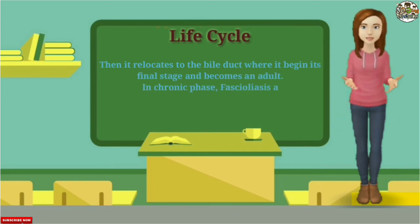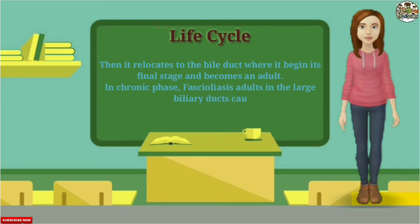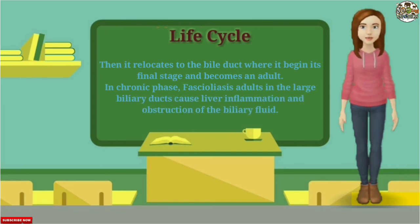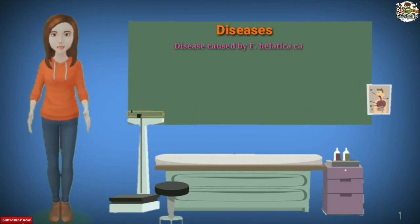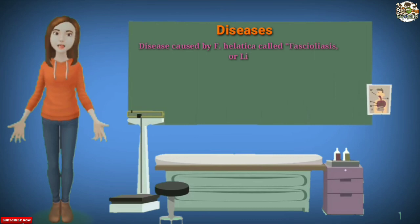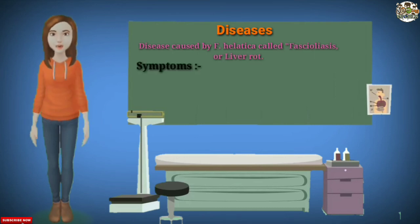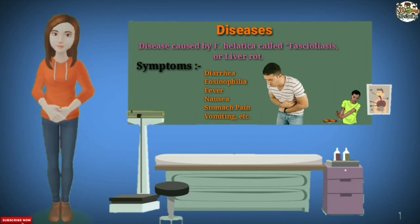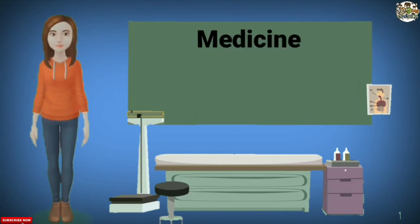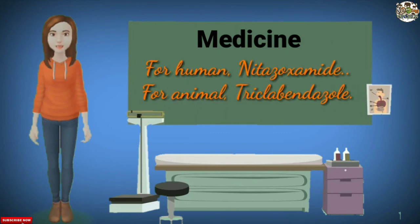In the chronic phase, Fasciola adults in the large biliary ducts cause liver inflammation and obstruction of biliary fluid. The disease caused by Fasciola hepatica is called fascioliasis, or liver rot. Symptoms include diarrhea, eosinophilia, fever, nausea, stomach pain, and vomiting. The drug for human fascioliasis is nitazoxanide, and for animals it is triclabendazole.